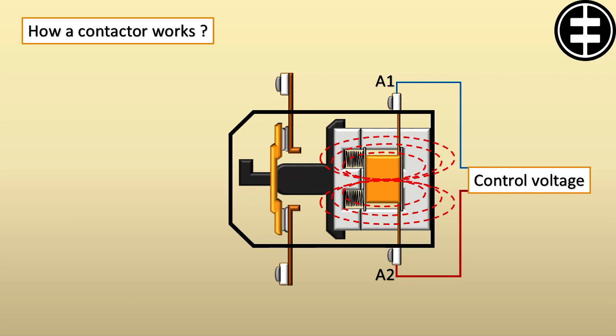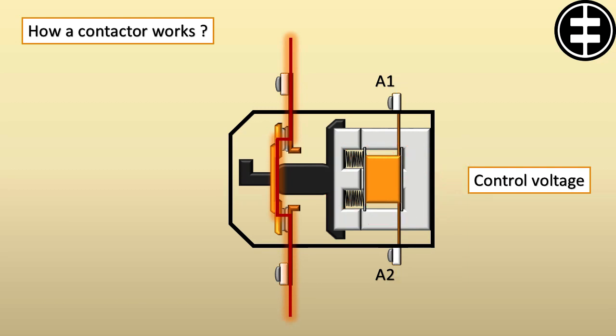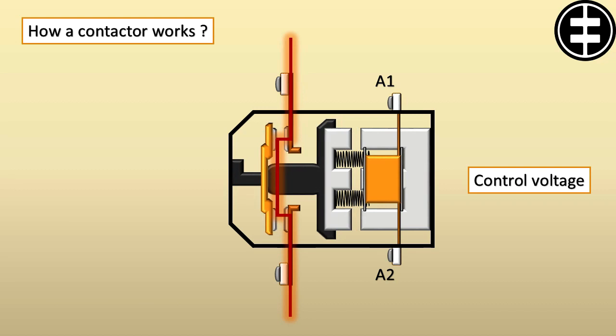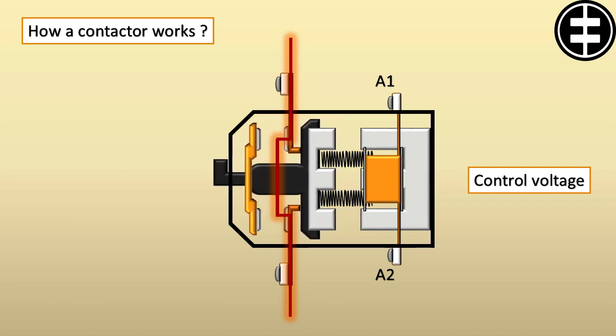If we interrupt the control voltage supplying the coil, the magnetic field will disappear, and the force spring will push the movable parts back to their original position, which will lead to interrupting the power going to the load.